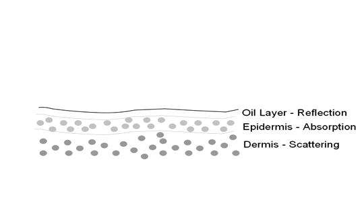We developed a new skin reflectance model and fit the measured data to our model. Skin reflectance is due to specular light reflection on the skin surface and diffuse light reflection due to subsurface scattering. This figure shows a cross-section of the main layers of human skin: the oil layer, the epidermis, and the dermis.